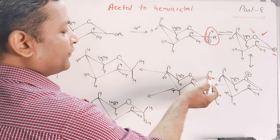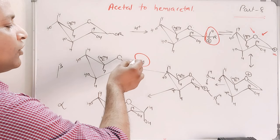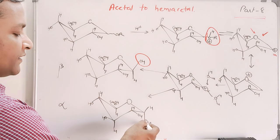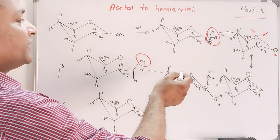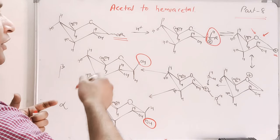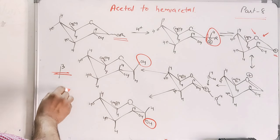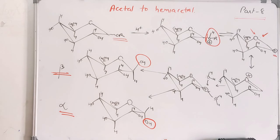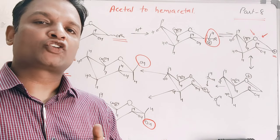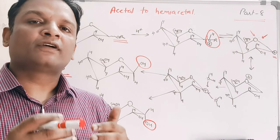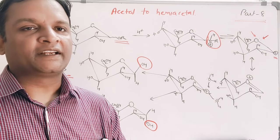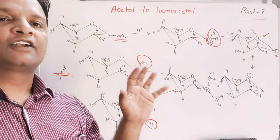This carbocation can show attack of water from the above side or from the lower side. When water attacks from the above side, we observe formation of OH on the above side. When water attacks from the lower side, OH forms on the lower side. So from acetal, treatment with acid gives a mixture of both alpha and beta hemiacetal forms. The conversion of hemiacetal to acetal always gives a mixture of alpha and beta, and similarly conversion of acetal to hemiacetal always gives a mixture of alpha and beta.